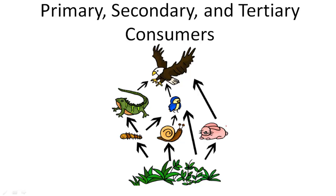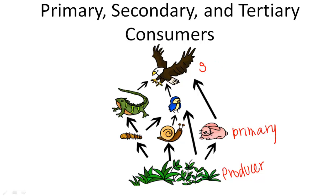Let's look here. Here we have our producer. Now the rabbit eats the producer, so that is a primary consumer. This hawk eats the rabbit, so it is a secondary consumer because it eats a primary consumer.